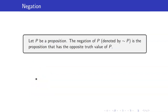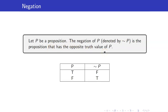Let us start with the negation of a proposition. Suppose that we have a proposition P. The negation of P, denoted by not P, is the proposition that has the opposite truth value of P. Thus, if we look at the truth table: if P is true, not P should be false; if P is false, not P should be true.